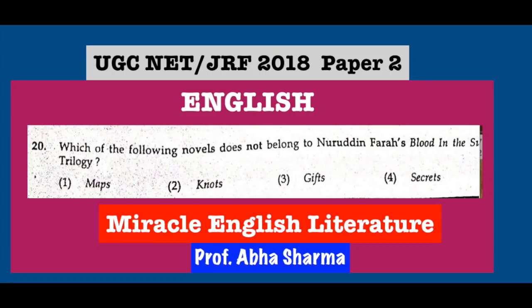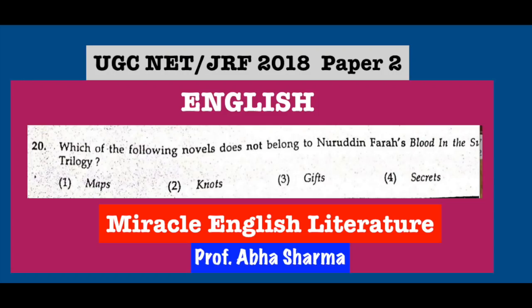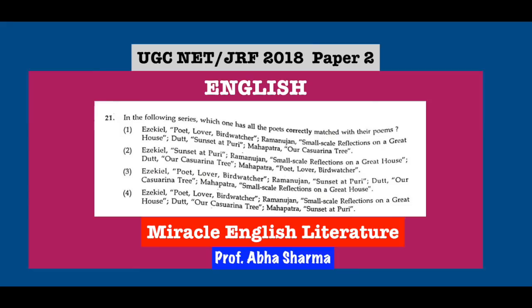Question number 20: Which of the following novels does not belong to Nuruddin Farah's Blood in the Sun Trilogy? Nuruddin Farah is a Somali writer who lived in many countries including the US and various African countries. His work is diasporic in nature. The three novels in Blood in the Sun are Maps, Gifts, and Secrets. He also wrote another set of trilogies — Links, Knots, and Crossbones — known as the Past Imperfect Trilogy.